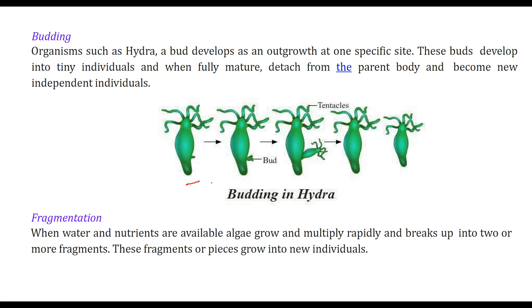In budding, organisms like hydra develop a bud as an outgrowth at a specific site. These buds develop into tiny individuals, fully mature, and then detach themselves from the parent body, becoming fully independent individuals just like the parent.